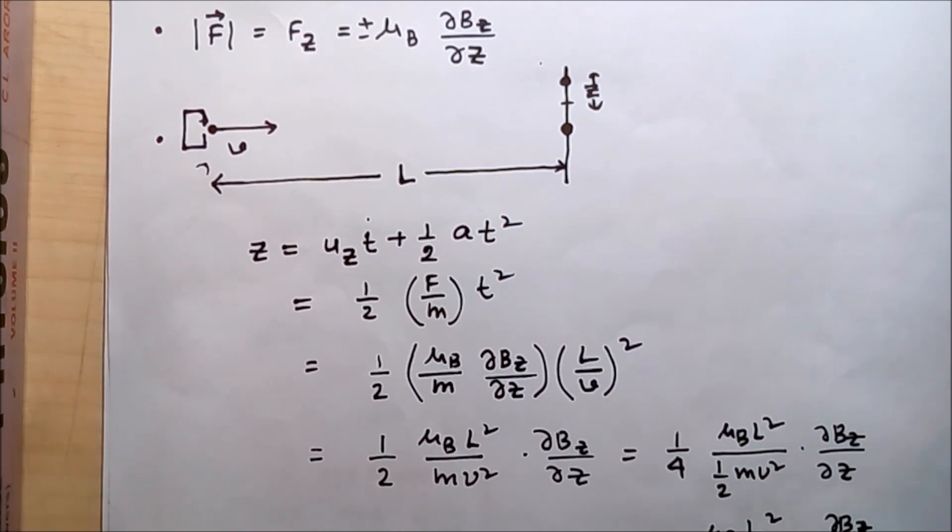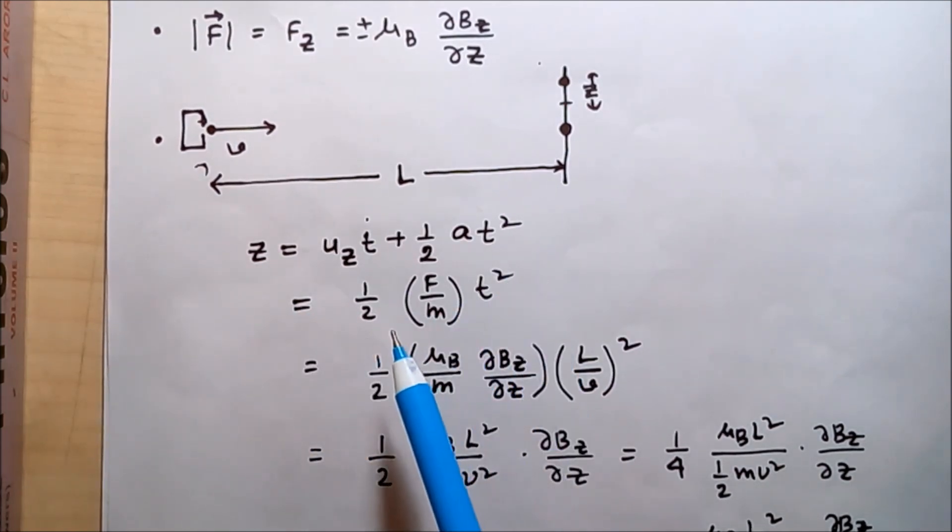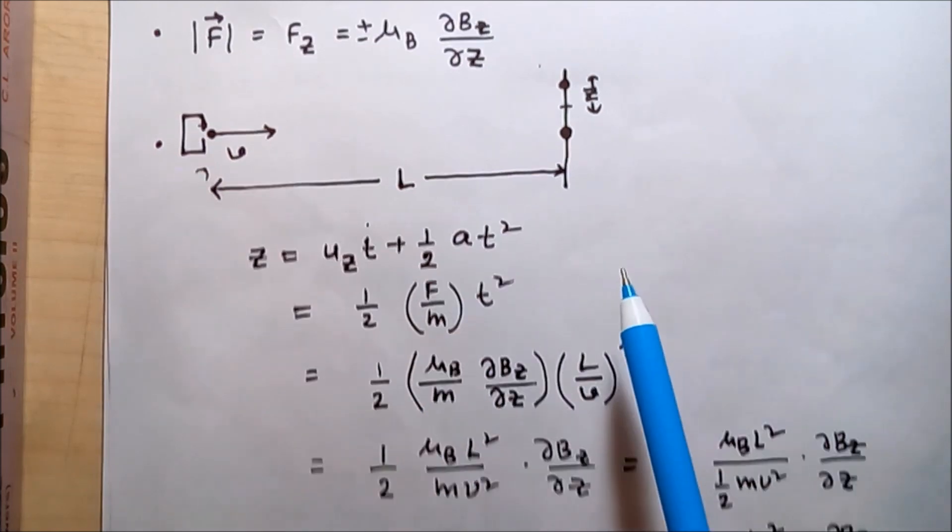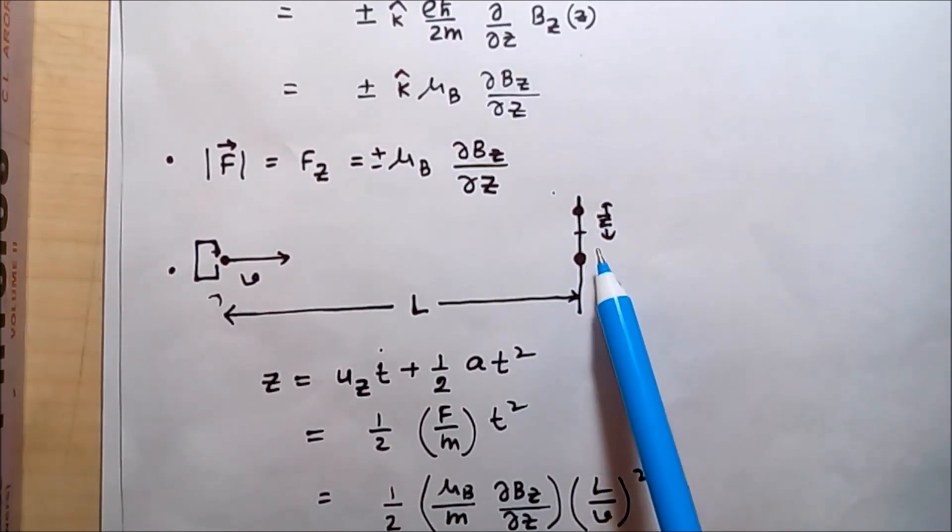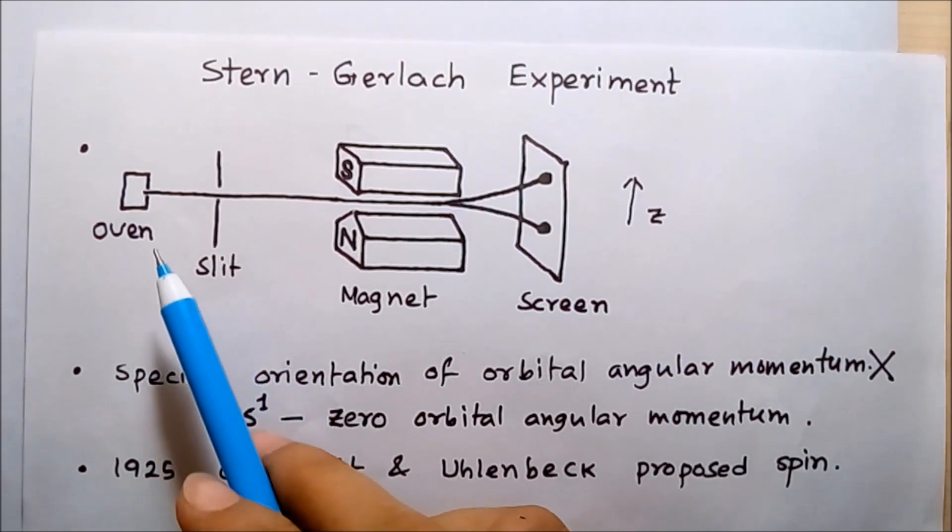We put all the values in this equation, calculate Z, and then compare the value of Z with the experimental result. It turns out that they fit perfectly. So this experiment proves the existence of the spin angular momentum.